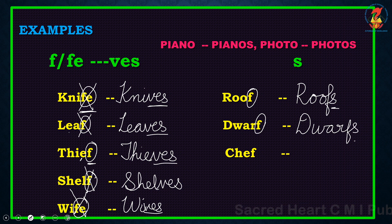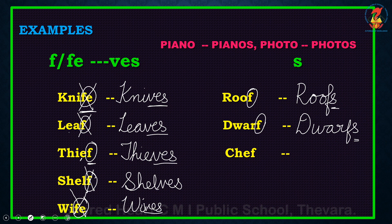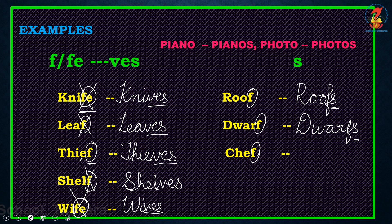Brush became brushes. Bench became benches. Fox became foxes. Glass became glasses. Bus became buses. Mango became mangoes — because they are ending with SH, CH, X, SS, S, and O.